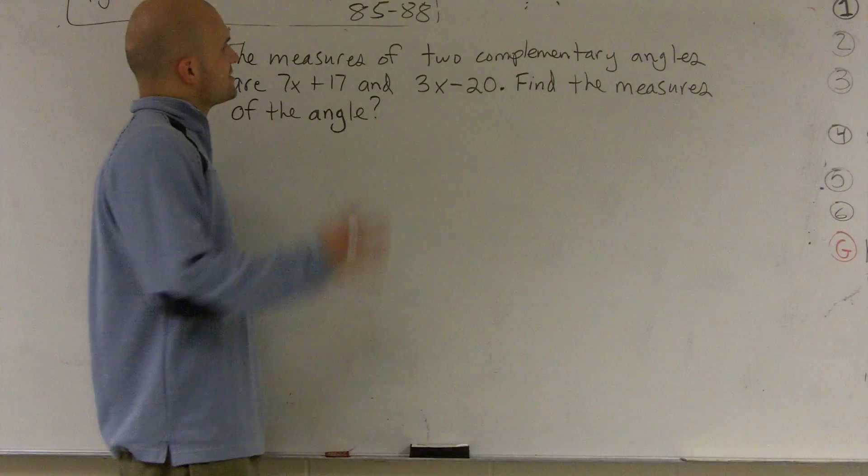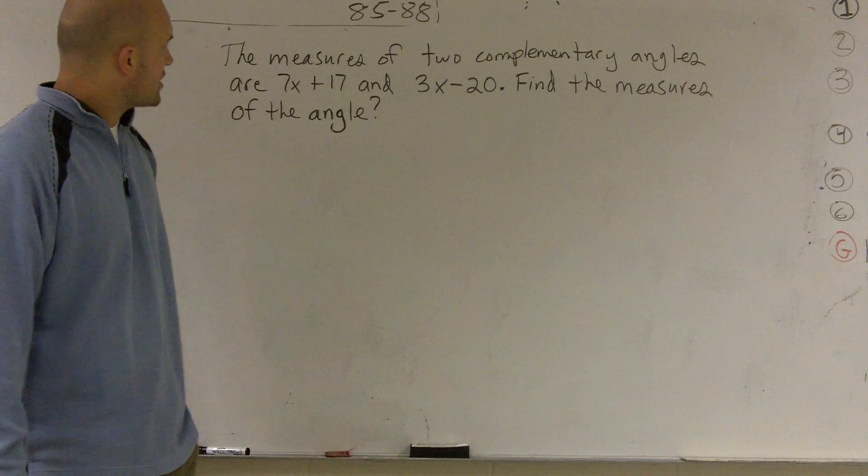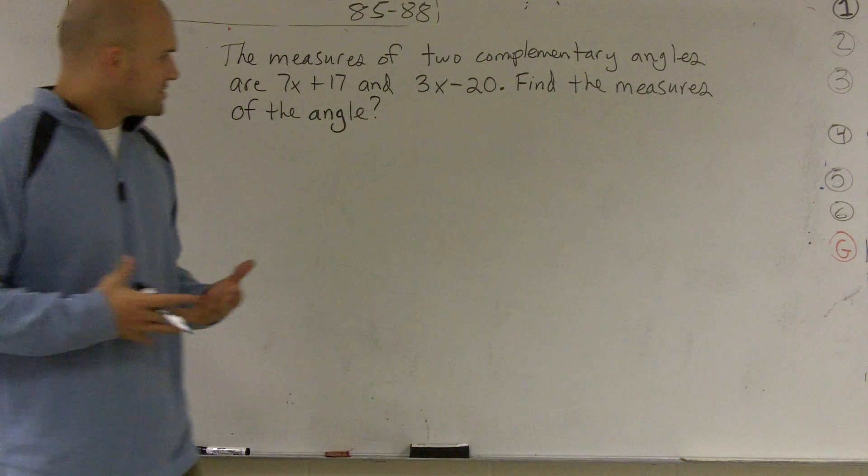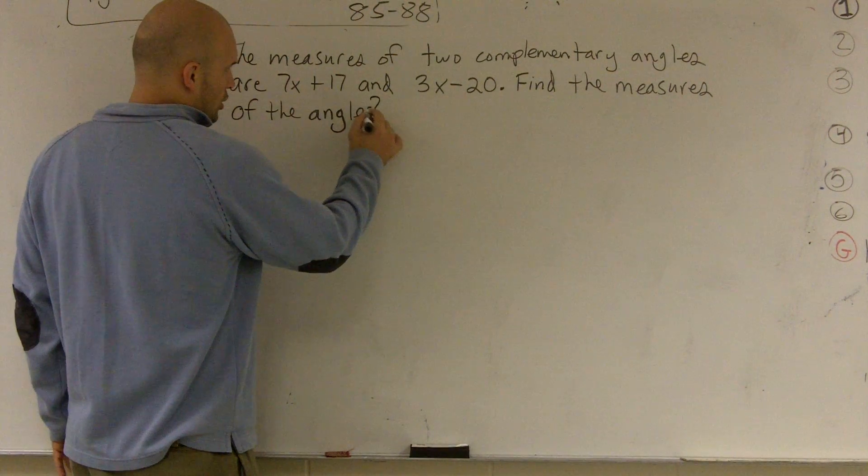All right. For this problem, what it says is the measures of two complementary angles are 7x plus 17 and 3x minus 20. Find the measure of the angles.